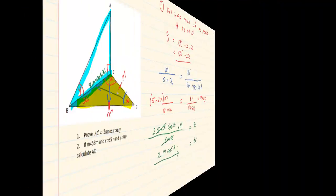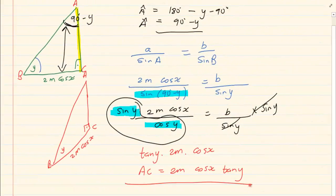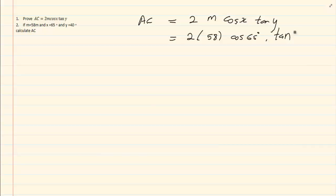Let us check the question: it says prove that AC equals 2M cos X tan Y — and that is exactly what we just proved. Next, if M equals 58 meters, X equals 65 degrees, and Y equals 40 degrees, substitute into 2M cos X tan Y and use your calculator. The final answer is 67.3 meters.